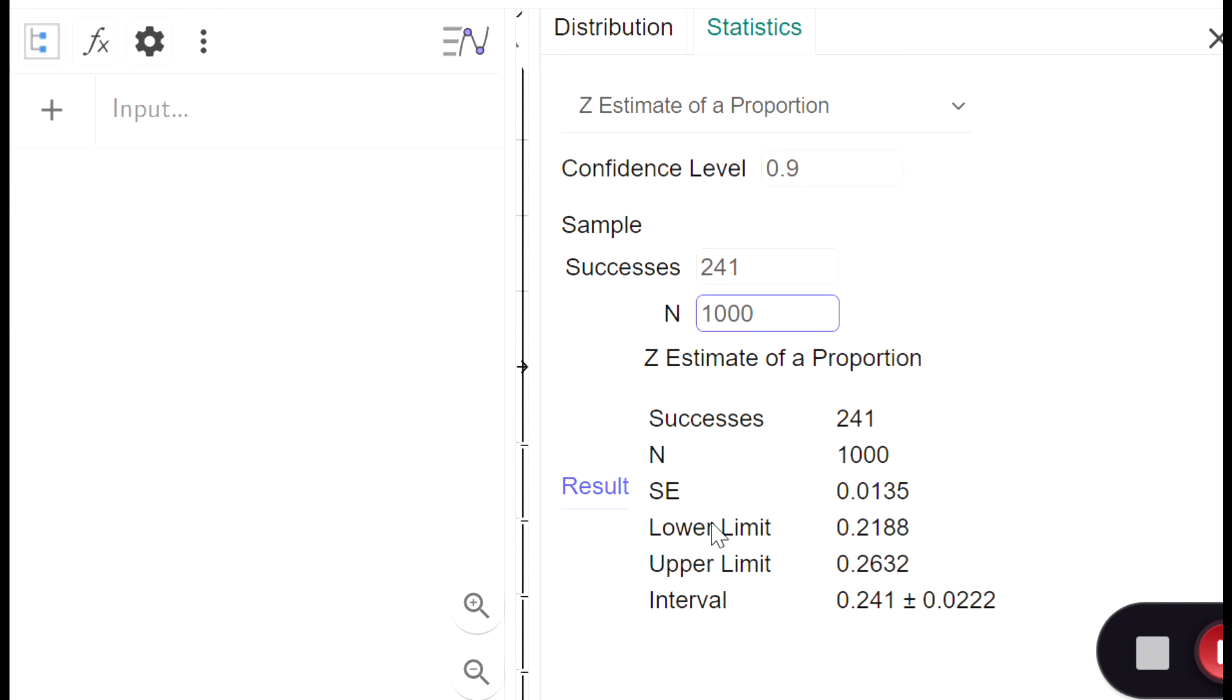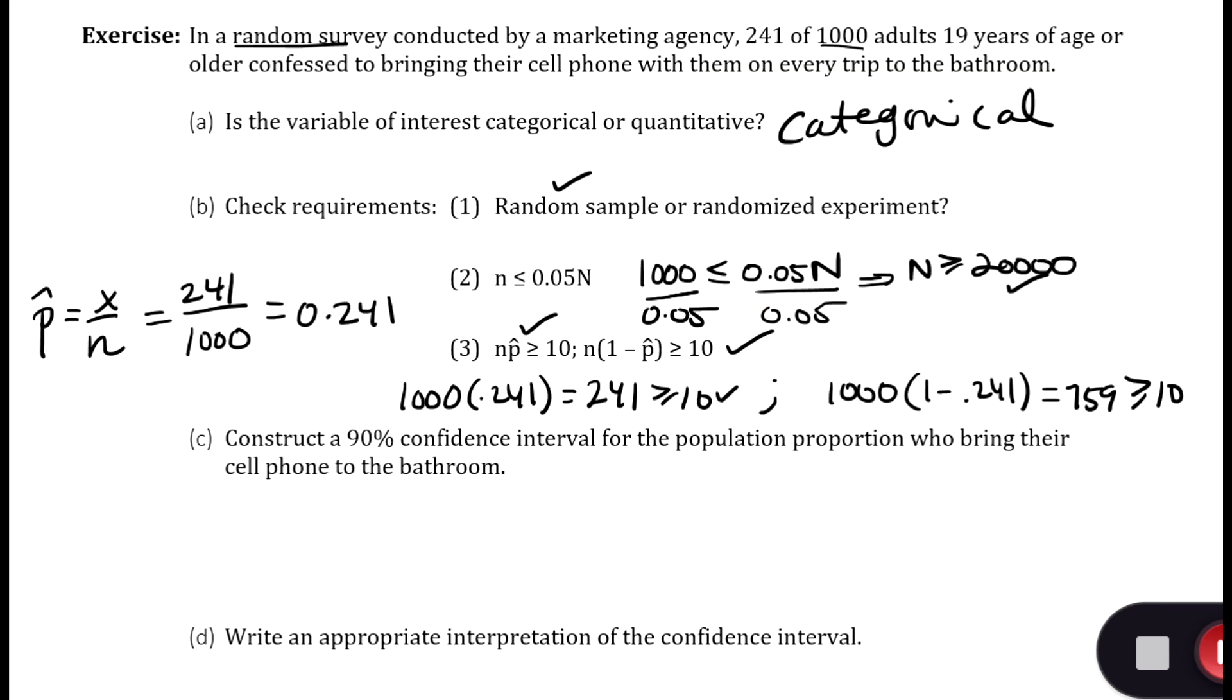I have our lower limit, upper limit, and then another way to write our interval. So I'm going to write these three lines on the other sheet. I have my lower limit, which was 0.2188. My upper limit was 0.2632. Or it could be 0.241 plus or minus 0.0222.